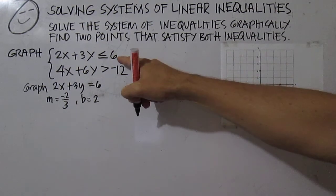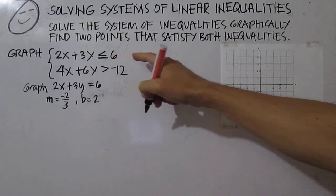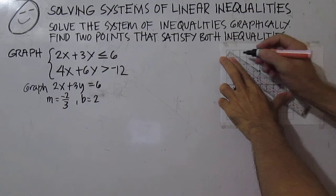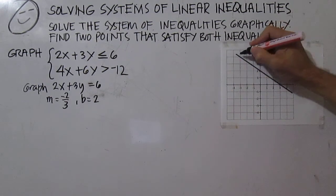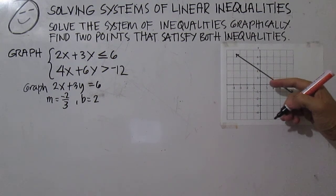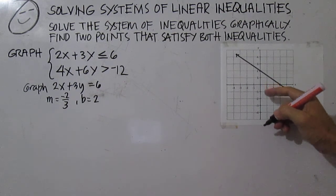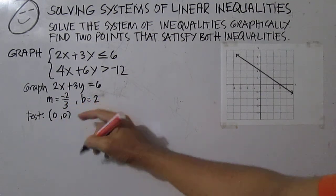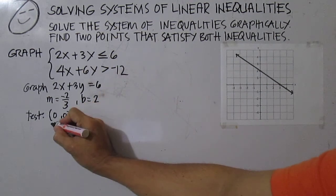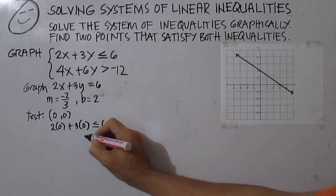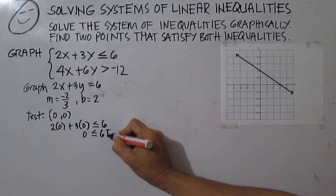Since we have a less than or equal to inequality symbol, draw a solid line. The line now divides the region into two half planes. Let's choose a point in one of the half planes — let's try (0, 0). Substitute this into the inequality: 2 times 0 plus 3 times 0 is less than or equal to 6. Zero is less than or equal to 6, which is true.